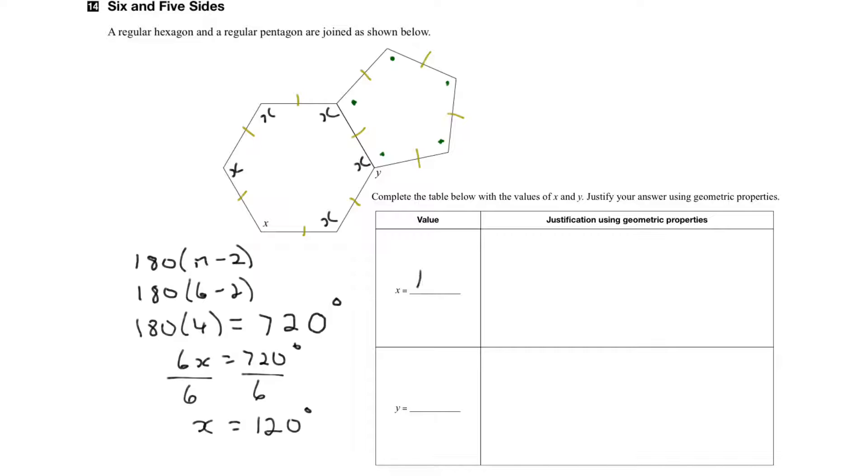So we can say that x is 120, and our justification would be this formula progression here.